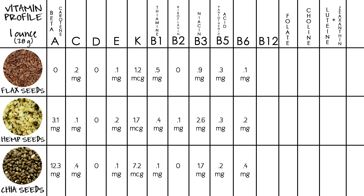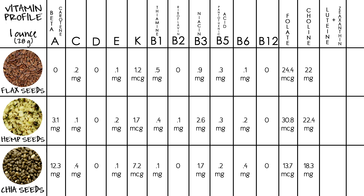For vitamin B6: flax seeds 0.1 mg, hemp seeds 0.2 mg, chia seeds 0.4 mg. There is zero vitamin B12 for all seeds. For folate: flax seeds 24.4 micrograms, hemp seeds 30.8 micrograms, chia seeds 13.7 micrograms. For choline: flax seeds 22 mg, hemp seeds 22.4 mg, chia seeds 18.3 mg. For lutein and zeaxanthin: flax seeds 182 micrograms, hemp seeds 250.3 micrograms, and chia seeds 328.7 micrograms.